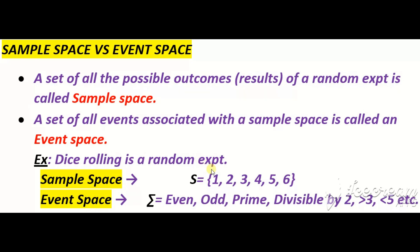جب ہم dice roll کرتے ہیں تو اس پہ one بھی آ سکتا ہے، two بھی، three بھی، four بھی، five بھی، six بھی آ سکتا ہے۔ اس کے علاوہ ایسا نہیں ہوتا کہ dice roll کریں اور seven آئے۔ تو ان تمام probable results کو within brackets لکھا، جسے ہم S سے denote کرتے ہیں — this is called sample space۔